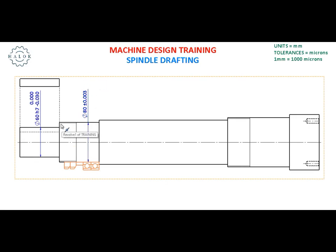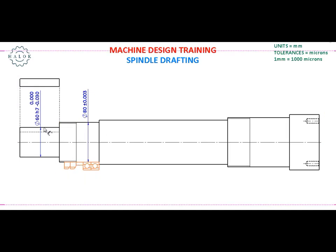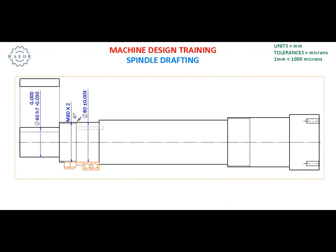Dimensioning this threaded area — you can see how I represented the threaded area; you can also hatch and show it for better representation. This threaded area is going to carry the two lock nuts. We are going to use a standard M80 by 2 lock nut, so we are going to generate an M80 thread in this portion.